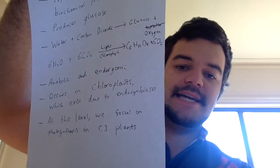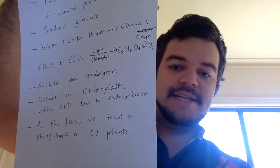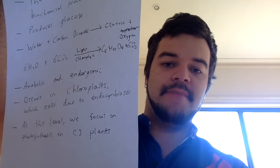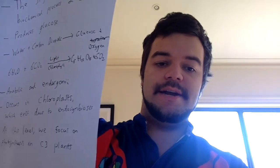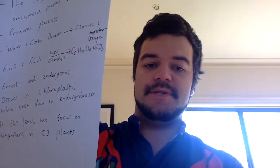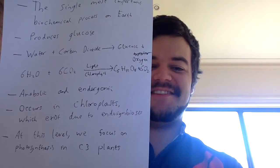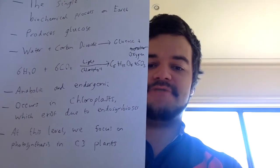Photosynthesis occurs in chloroplasts, which exist due to endosymbiosis — I have another video about endosymbiosis online. When we're talking about photosynthesis, we're talking about it in C3 plants. I've only put that in case you do some extra reading, because there is also photosynthesis in what we call C4 plants, which is slightly different. But at this level, we're only looking at photosynthesis in C3 plants.